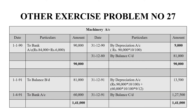In the machinery account: On 1990, Bank — 84,000 plus 6,000 = 90,000. At the end of the year, depreciation is 9,000, and the balancing figure of 81,000 is brought down to the next year. In 1991, another machinery of 60,000 is purchased. The debit side shows 81,000 and 60,000. Depreciation for first machinery: 90,000 × 10/100 = 9,000; for second machinery: 60,000 × 10/100 × 9/12 = 4,500; total depreciation 13,500. Credit balance is 1,27,500 and the grand total on both sides is 1,41,000.